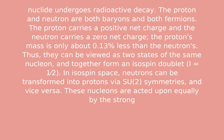The proton and neutron are both baryons and both fermions. The proton carries a positive net charge and the neutron carries a zero net charge. The proton's mass is only about 0.13 percent less than the neutron's.